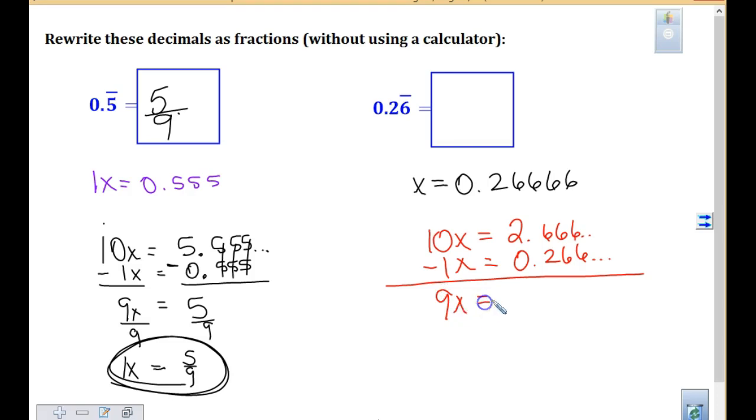9x. Oh, this one doesn't cancel anything. This is decimal. You'll have one like that on the quiz tomorrow. This is going to give me 2.4. What am I doing, Olivia, next?